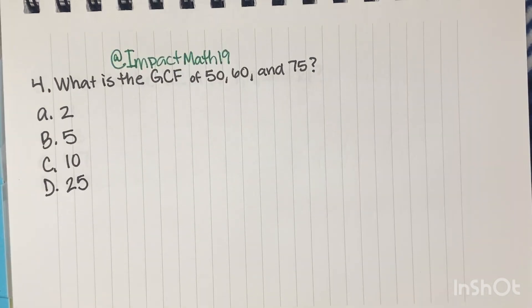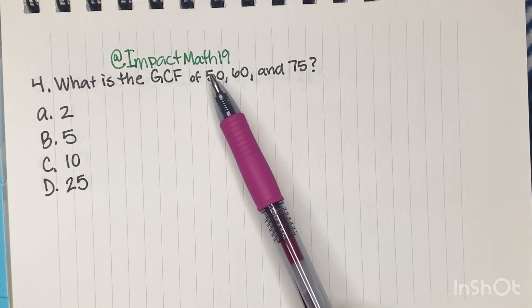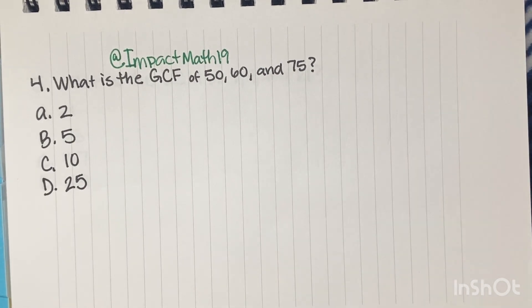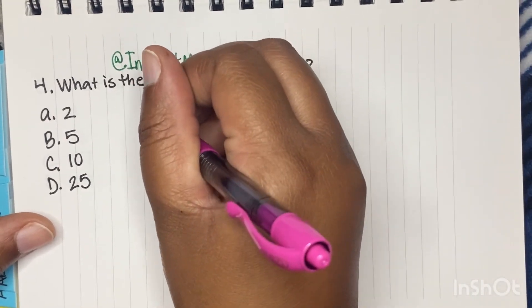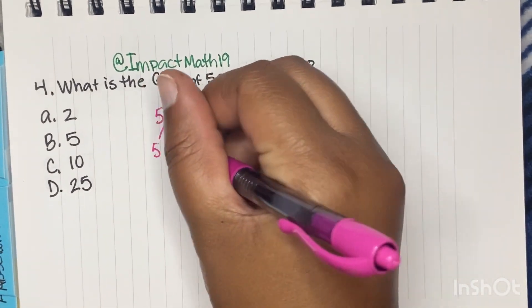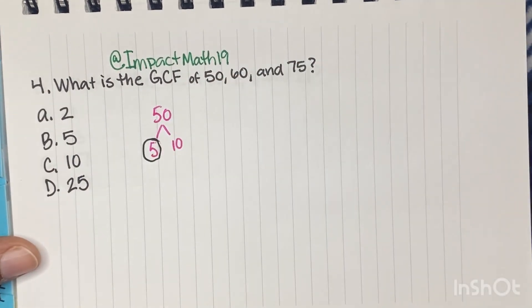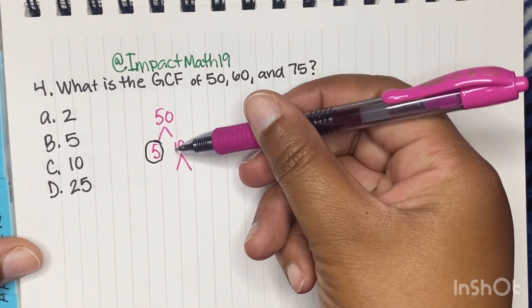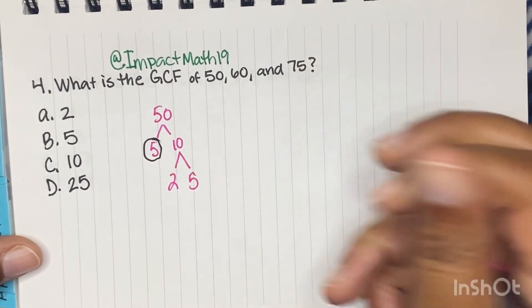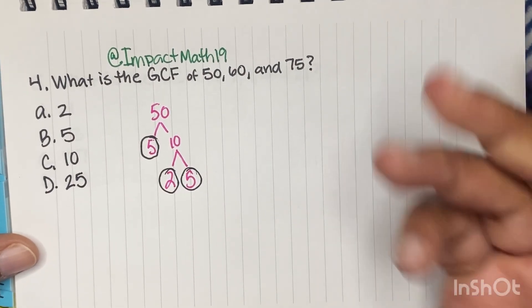What is the greatest common factor of 50, 60, and 75? So when you think about a factor, remember it has to be a number smaller than all of these. We're doing the opposite of multiples. So let's break down 50. What times what gives you 50? What came to my mind is five times 10. I'm going to stop at five because that's a prime. One times five is the only thing that can get you five. And then 10, two times five. And those are primes. So we're circling our primes.